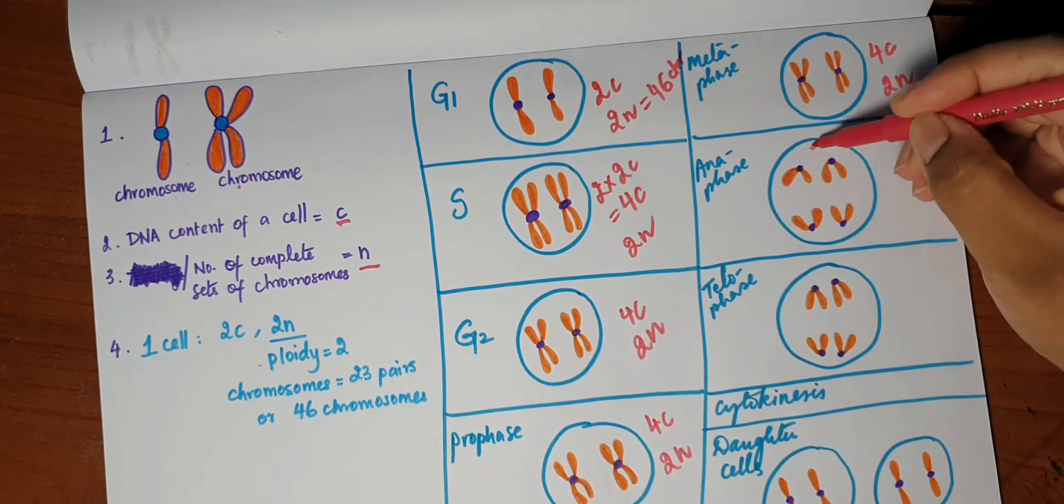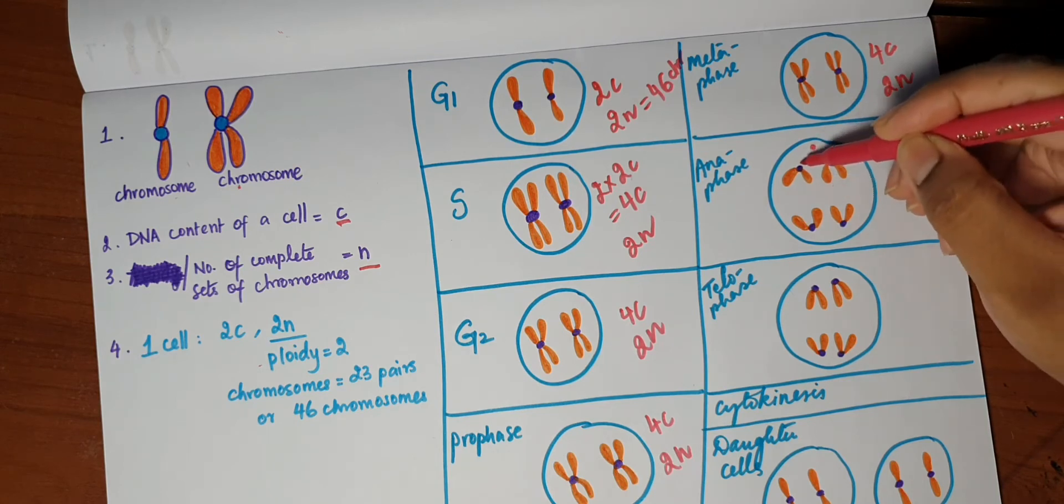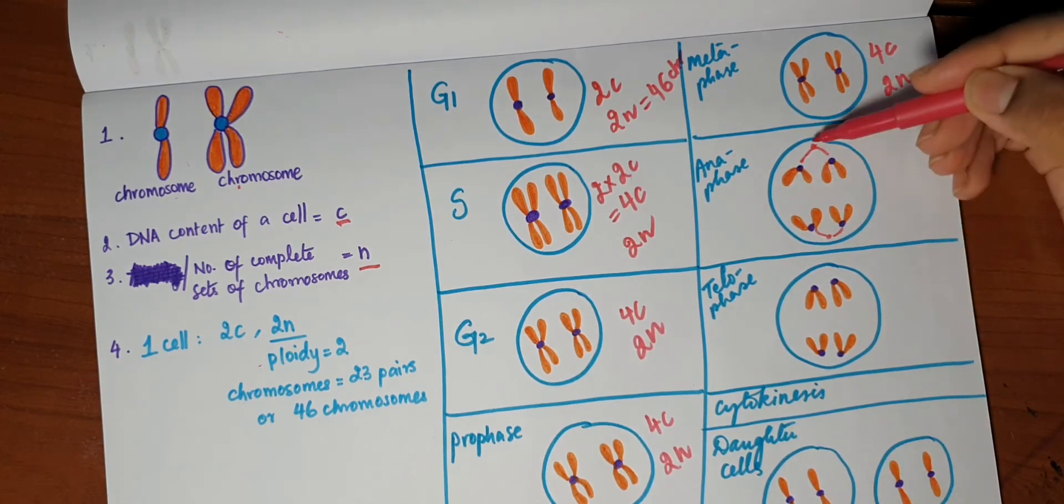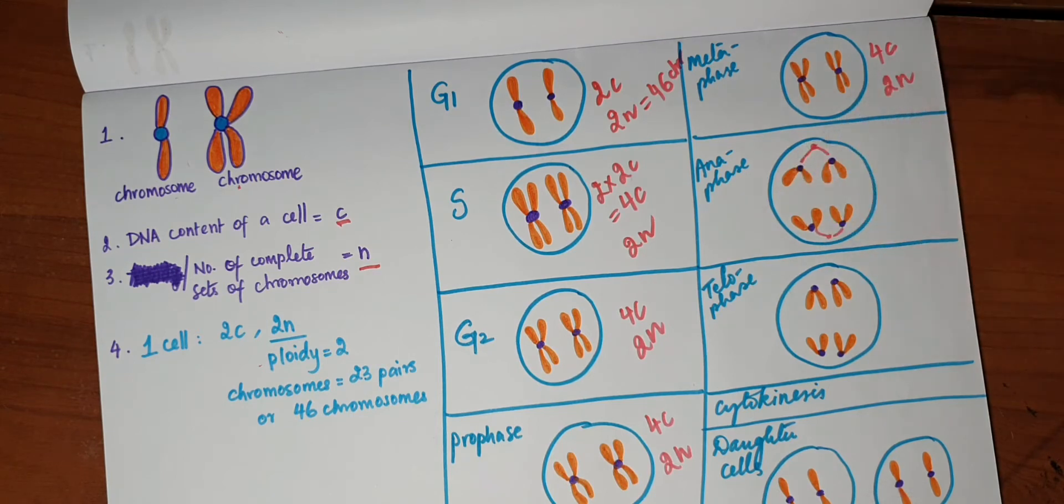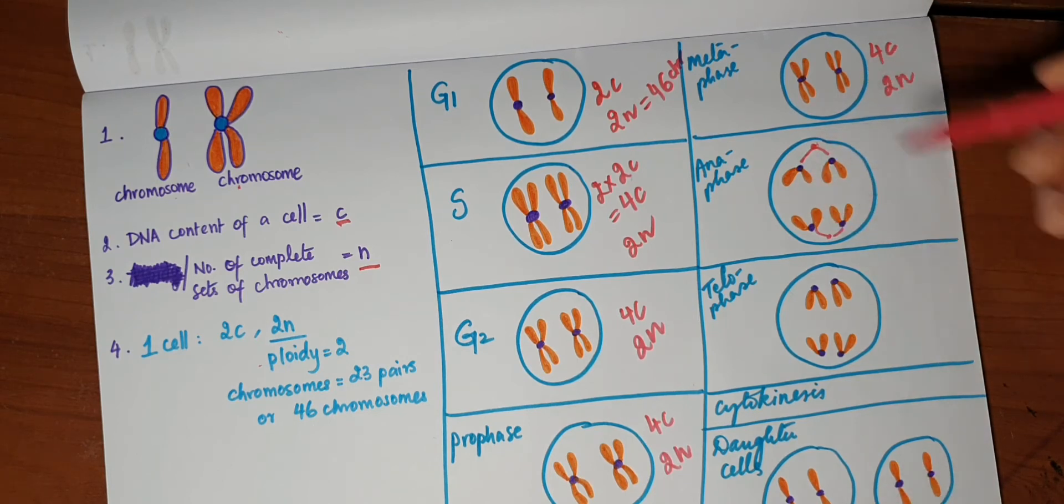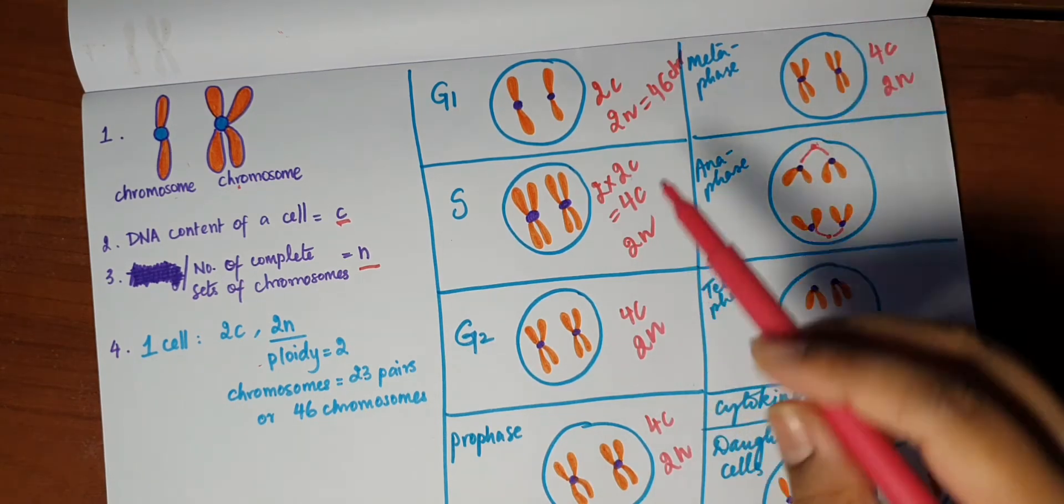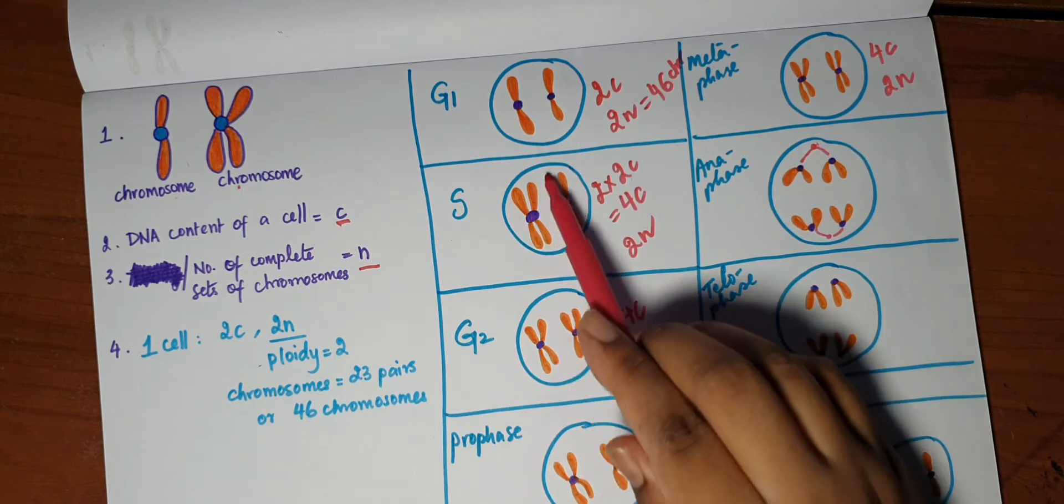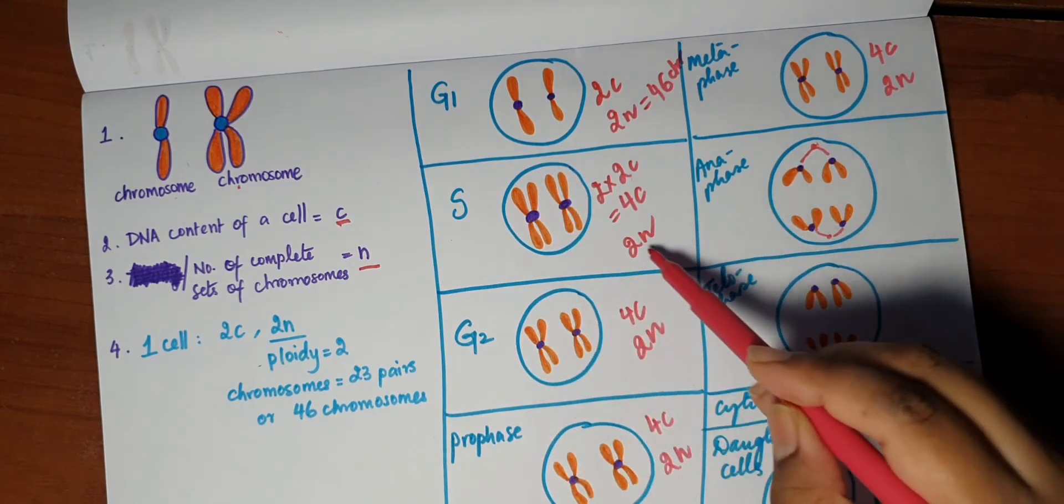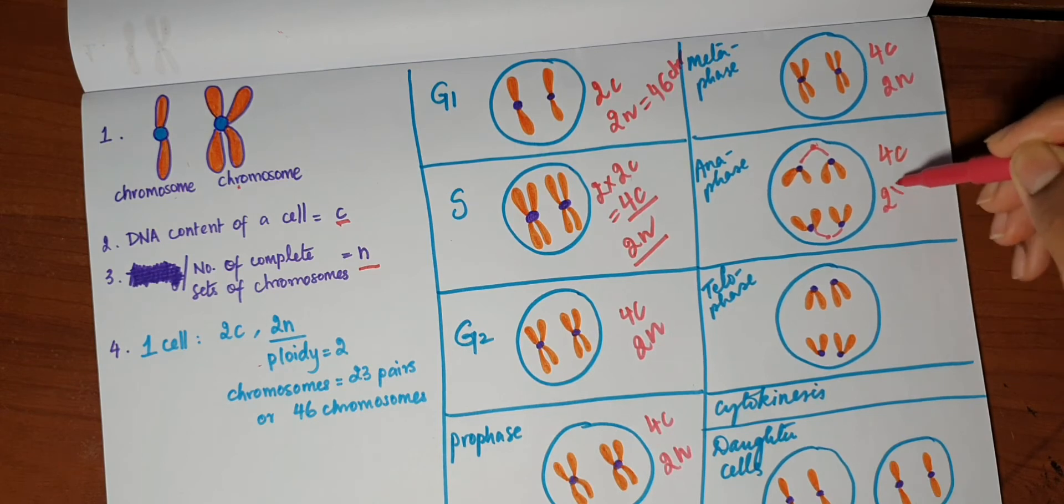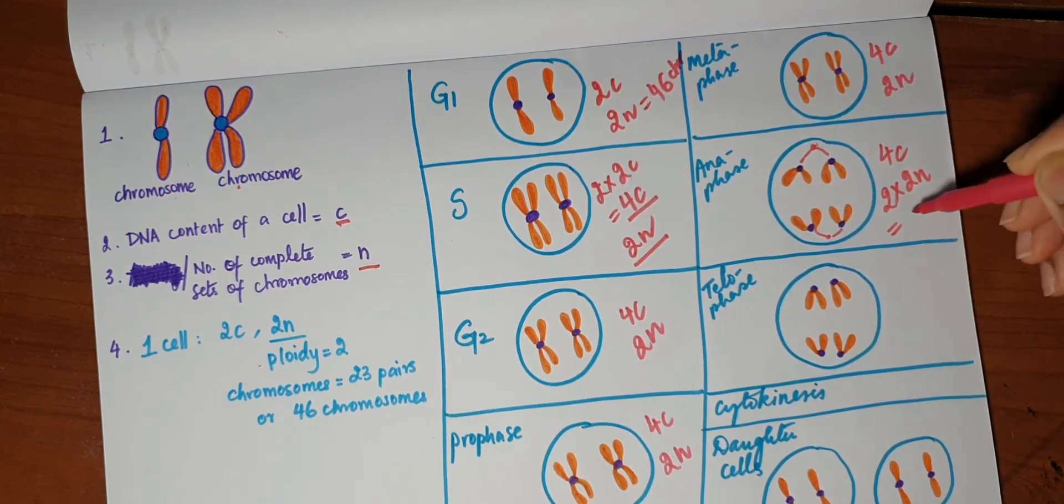In anaphase, if you remember the last video on mitosis, the spindles from the centrosome start separating the chromosomes to create two equal halves for the future daughter nuclei. So now each chromosome has been split into two, so we have twice the number of chromosomes as before. But the amount of DNA is the same. No replication has taken place. Nothing has happened. We have the same amount of DNA as we had from S phase, but each chromosome has been split into half. So the number of chromosomes has doubled, but the amount of content is the same. So DNA content is the same, 4c. The amount of chromosomes has multiplied by 2, so it's equal to 4n.